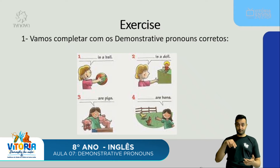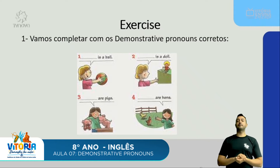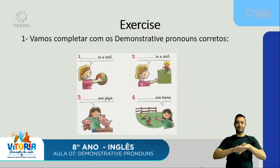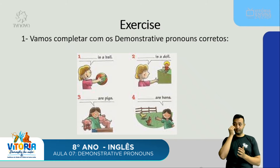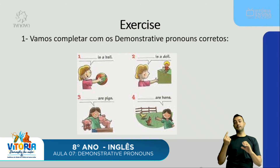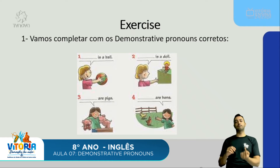Agora temos exercícios para aplicar o conteúdo aprendido. Vamos completar com os demonstrative pronouns corretos. Temos quatro imagens. Na imagem one, temos uma menina com uma bola nas mãos. Ela está próxima da bola — se está próxima, vamos utilizar 'this' ou 'these'. A bola está no singular — é apenas uma bola, one ball. Então o pronome correto é o 'this'. 'This is a ball'.